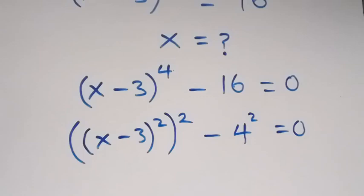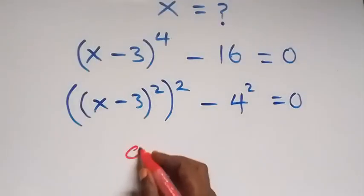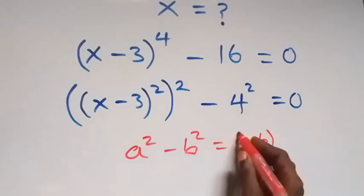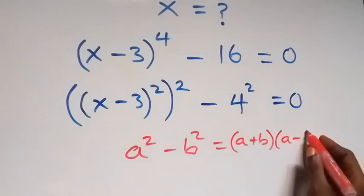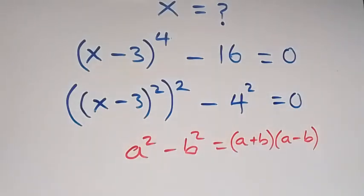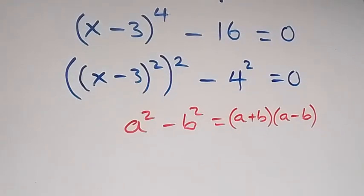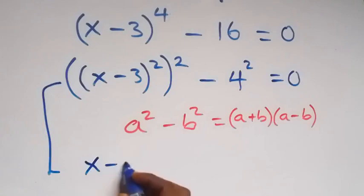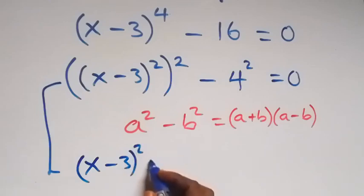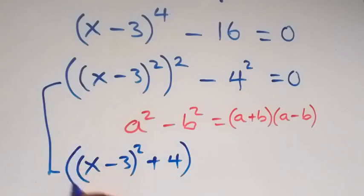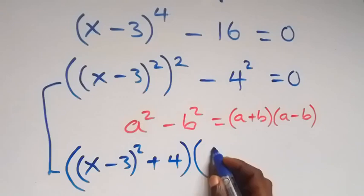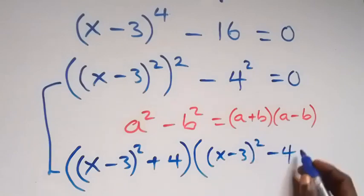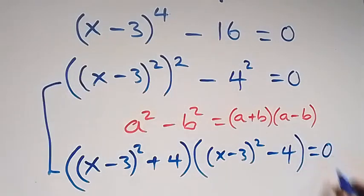This follows from the difference of squares: when we have a squared minus b squared, this gives us a plus b, multiplied by a minus b. From what we have here, x minus 3 squared stands as a, and 4 stands as b. So this becomes: open bracket x minus 3 squared, plus 4, close bracket, multiplied by open bracket x minus 3 squared, minus 4, close bracket, equals to 0.